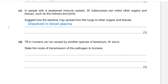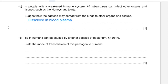Part D: TB in humans can be caused by another species, M. bovis. State the mode of transmission of this pathogen to humans. This could be due to drinking unpasteurized milk or eating meat of an animal that is infected with the species.